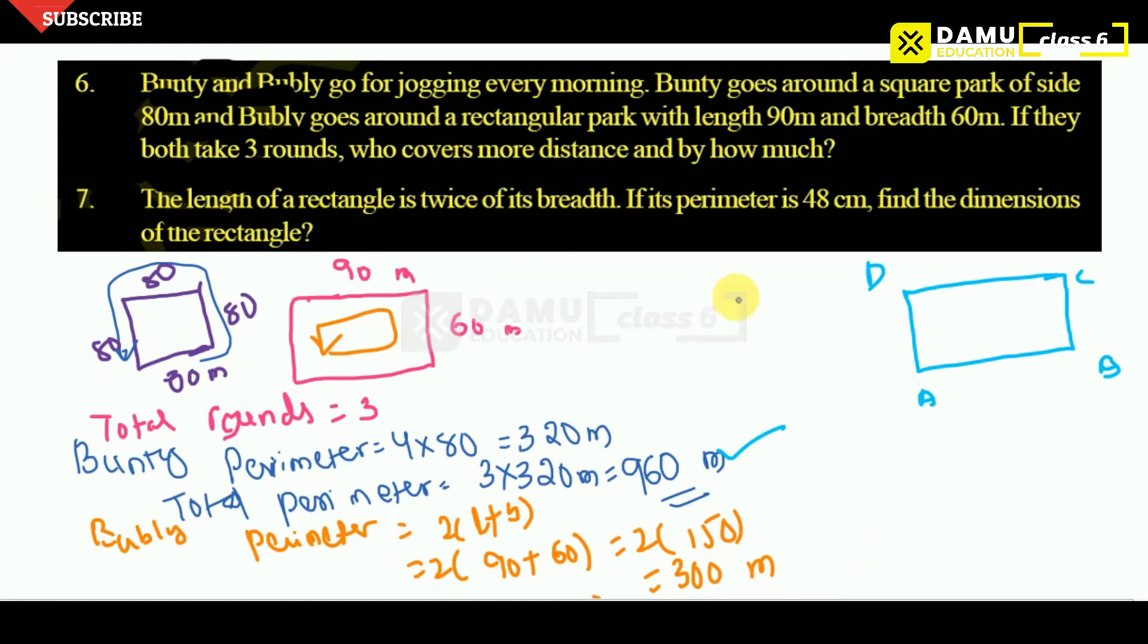Let's take length will be L, breadth will be B. So length will be L, then breadth will be B. So length is twice of its breadth. L will be equal to twice, means two times its breadth, 2B. Then it is 2B. Then perimeter the argument, 48 centimeter.